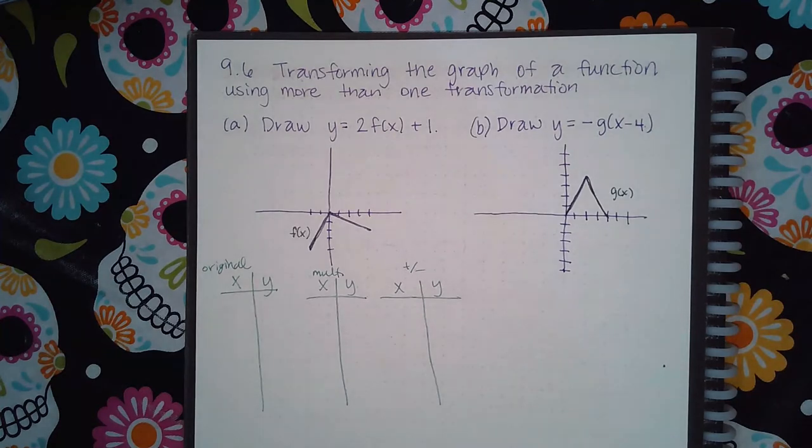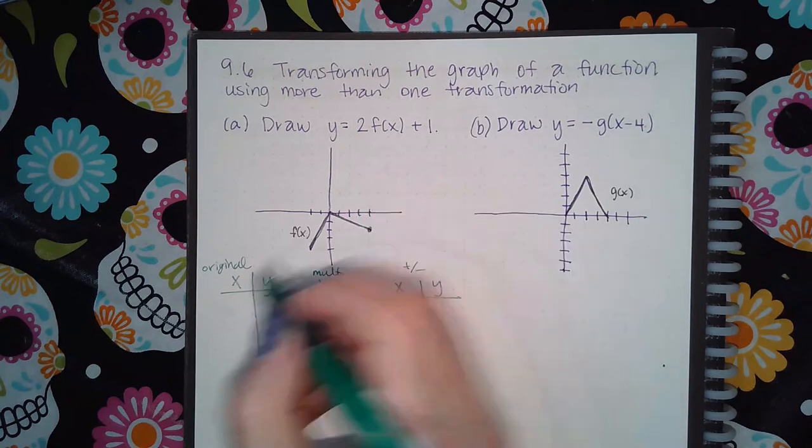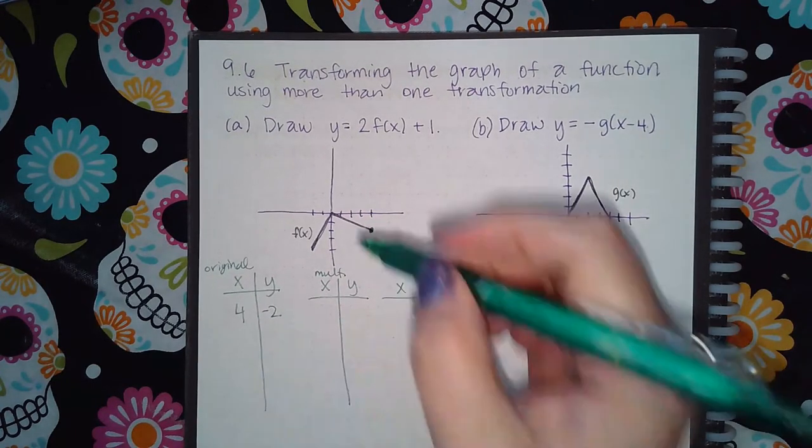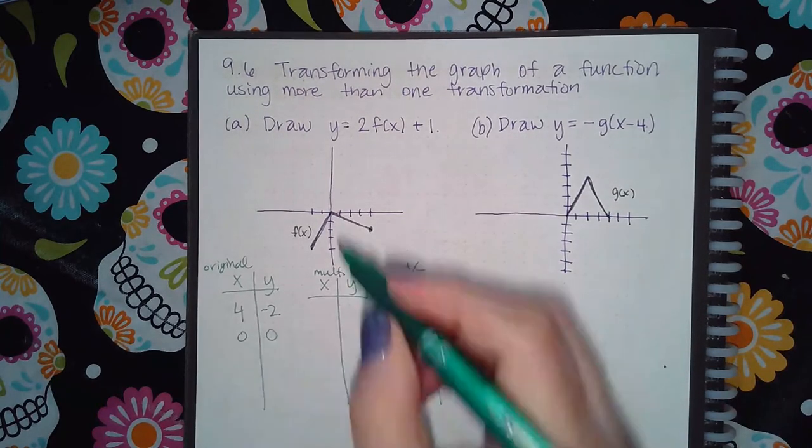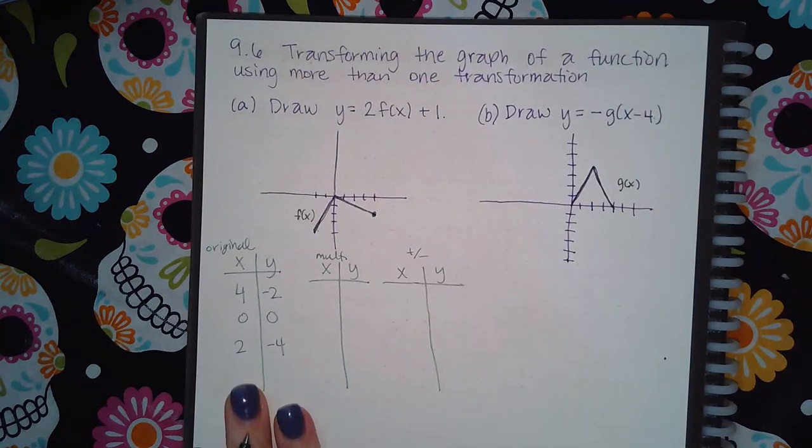Okay. So for the original, I'm going to take this coordinate here, which is negative four and negative two. Here we have zero, zero. And here we have two and negative four. So these are the coordinates of the original.